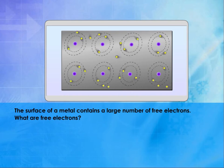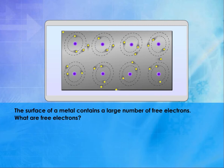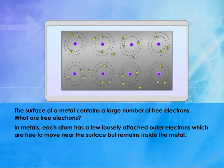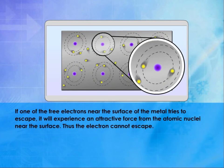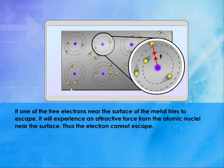The surface of a metal contains a large number of free electrons. In metals, each atom has a few loosely attached outer electrons which are free to move near the surface but remain inside the metal. If one of the free electrons near the surface of the metal tries to escape, it will experience an attractive force from the atomic nuclei near the surface. Thus, the electron cannot escape.